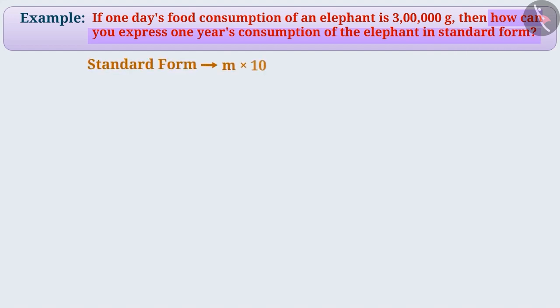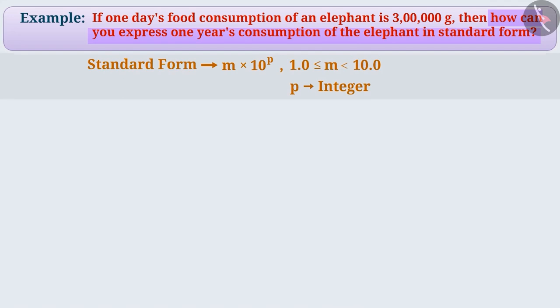The standard form of a number is written in the form of m into 10 to the power of p, where m is greater than or equal to 1.0 but less than 10.0, and the number p is an integer.